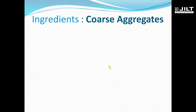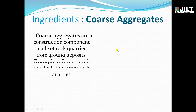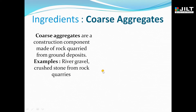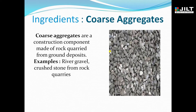Another ingredient of concrete is coarse aggregate. Basically, coarse aggregates are a construction component made of rock carried from ground deposits. We obtain this aggregate from ground deposits — examples include river gravel and crushed stone from a rock quarry. This is the image of the coarse aggregate.